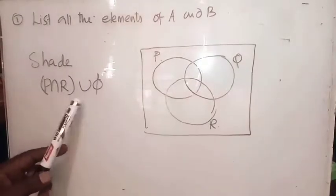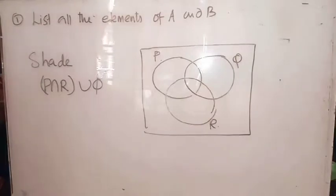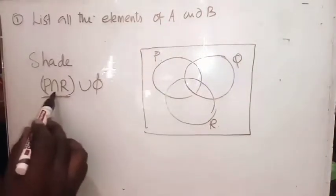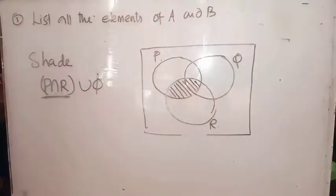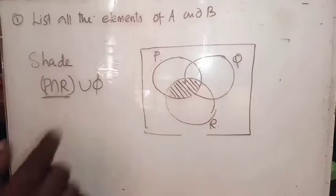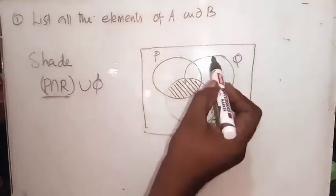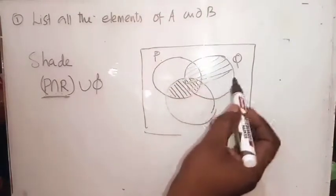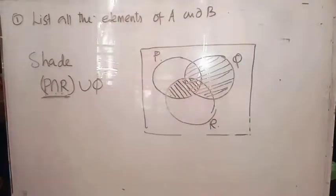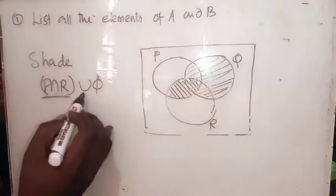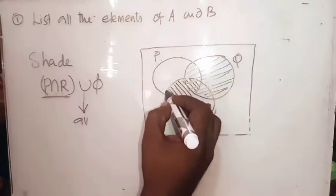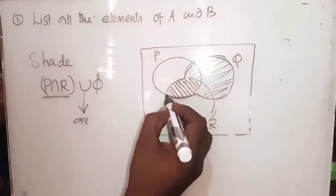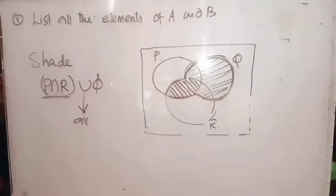The question is: shade P intersection R union Q. From the diagram, P intersection R is the common region of P and R. Then we also need Q. Since the operation between them is union, we take the total combined shade — P intersection R together with all of Q. So P intersection R union Q represents this full shaded region.